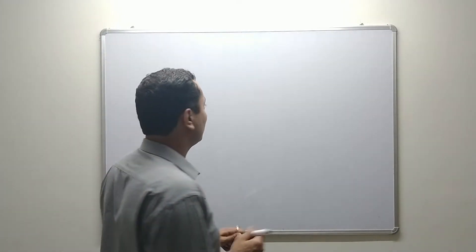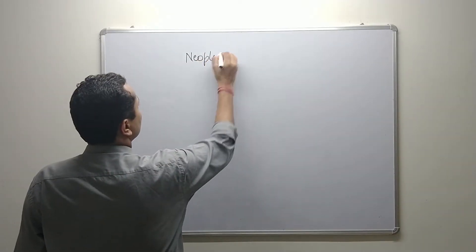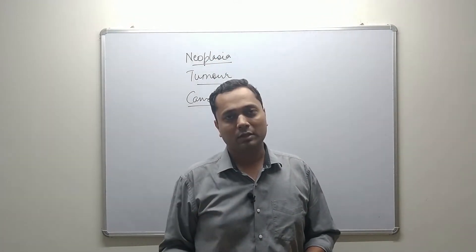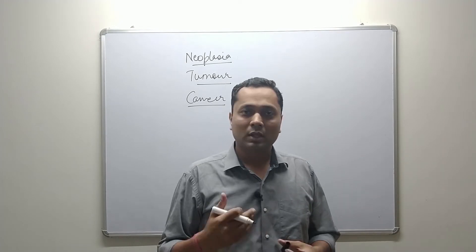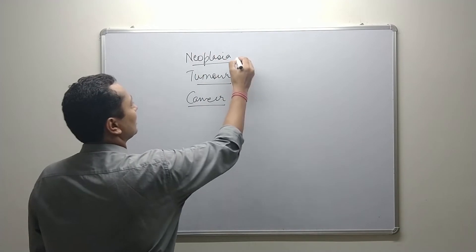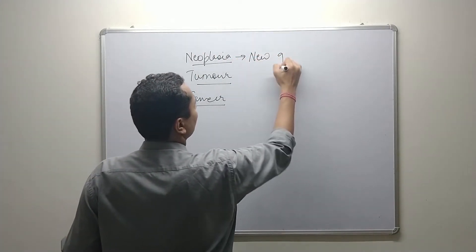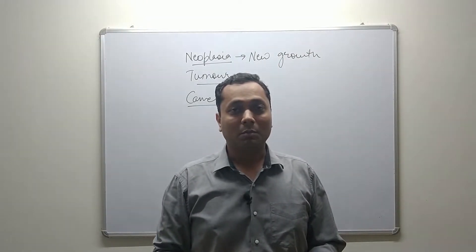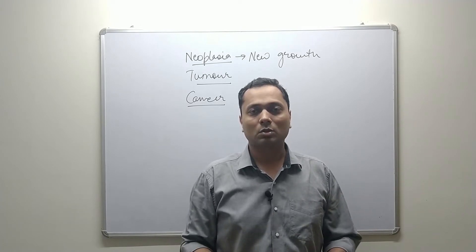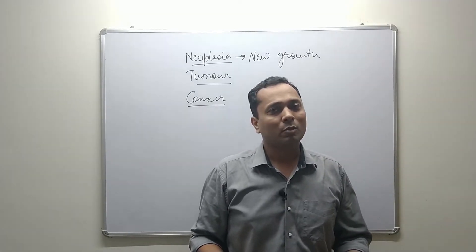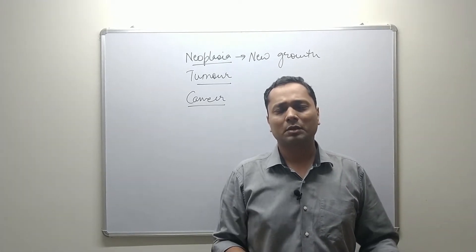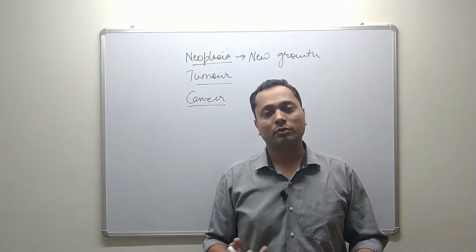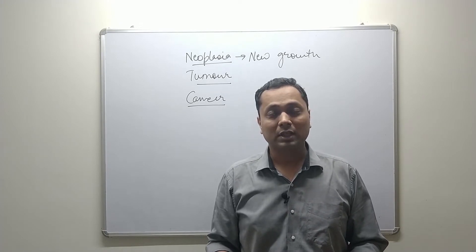Let's talk about a few key words: neoplasia, tumor, and cancer. Neo means new — neoplasia means new growth. Whenever there is new growth of cells that is uncontrolled, it is called neoplasia. If the growth is controlled, this is a physiological process — billions of cells die and are produced every day. But if there is uncontrolled growth of body cells, then it is called neoplasia.